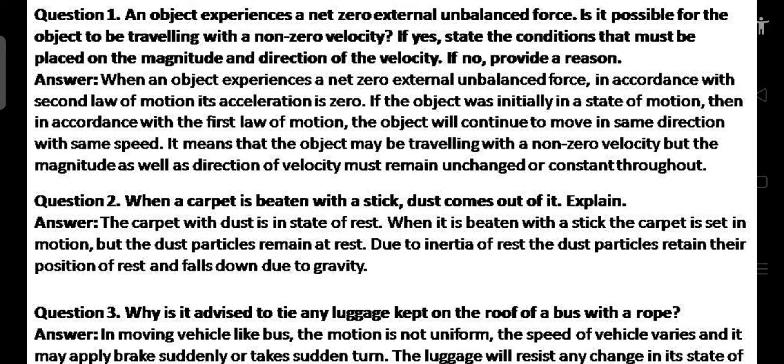Q1: An object experiences a net zero external unbalanced force. Is it possible for the object to be traveling with a non-zero velocity? Yes. When an object experiences a net zero external unbalanced force, in accordance with the second law of motion, its acceleration is 0. If the object was initially in a state of motion, then in accordance with the first law of motion, the object will continue to move in the same direction with the same speed. It means the object may be traveling with a non-zero velocity, but the magnitude as well as direction of velocity must remain unchanged or constant throughout.